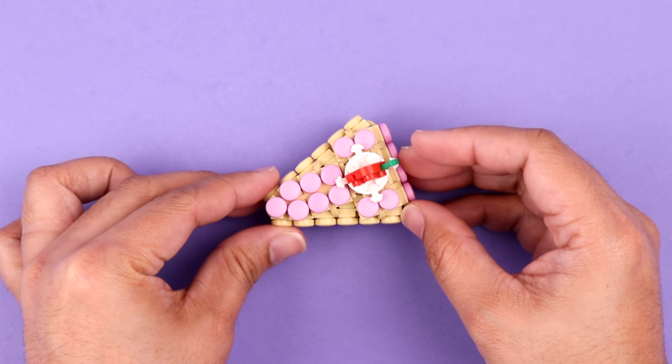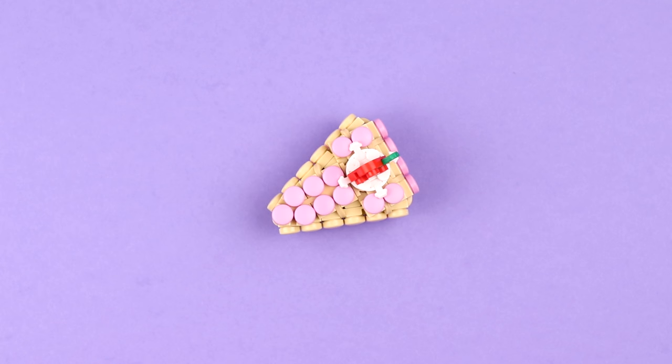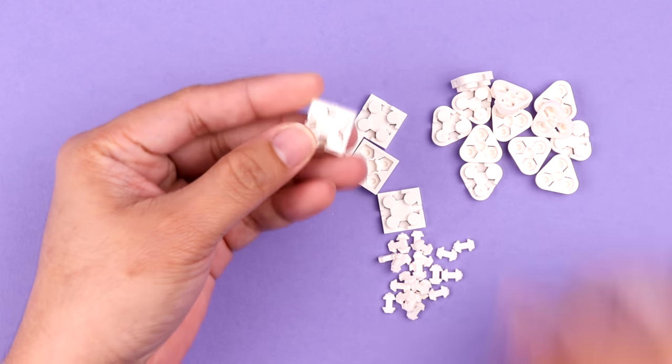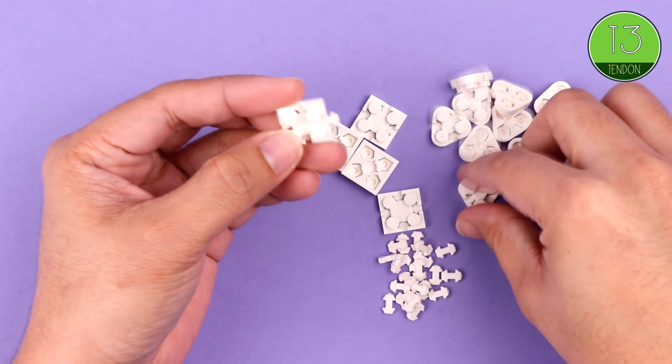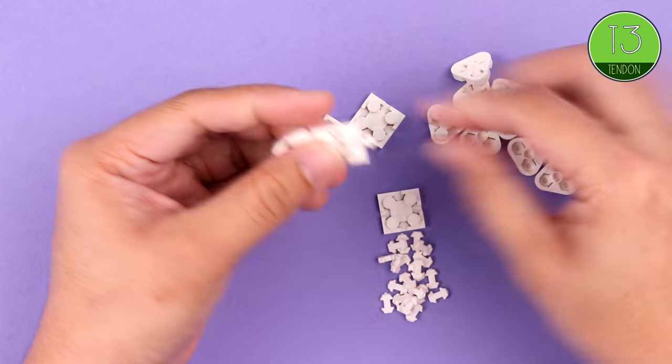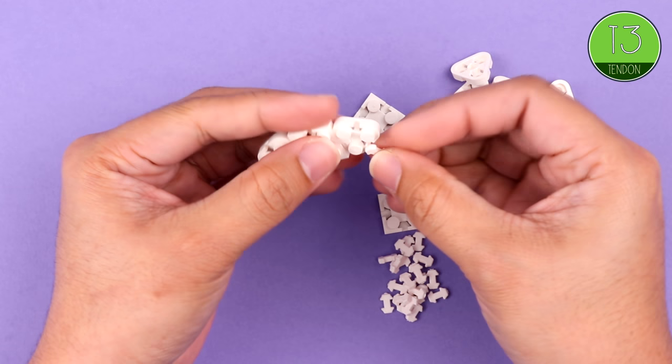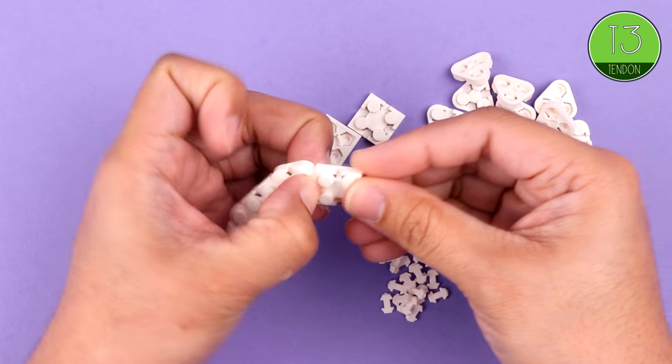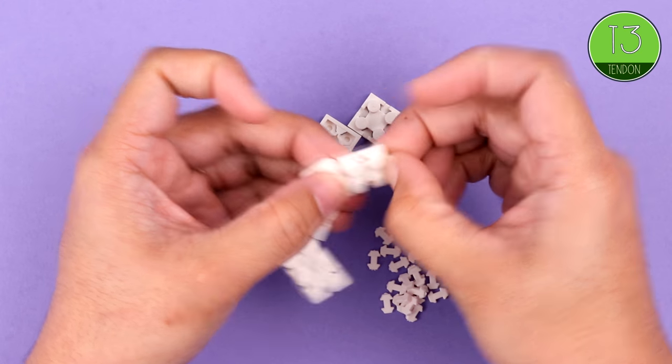So we want something to serve our cake on, so we're just going to make a very simple plate. This one begins by making a pattern that involves alternating square and triangle bricks, one after the other, using T3 tendons. And you just keep following your way around until you've got a ring.